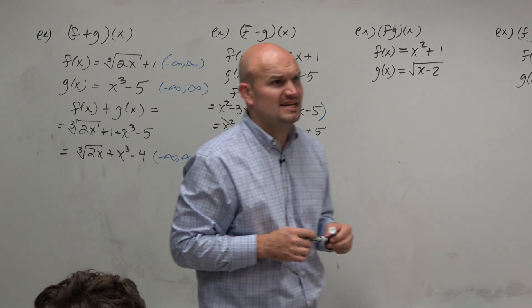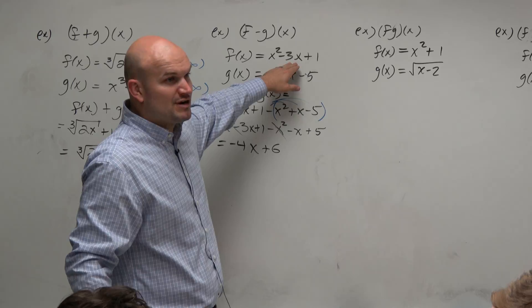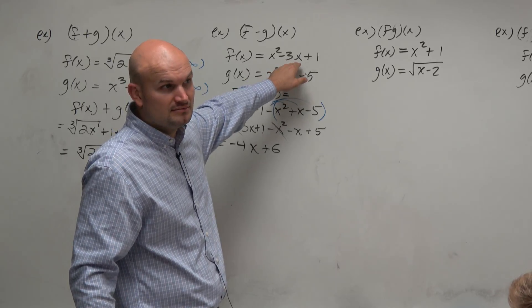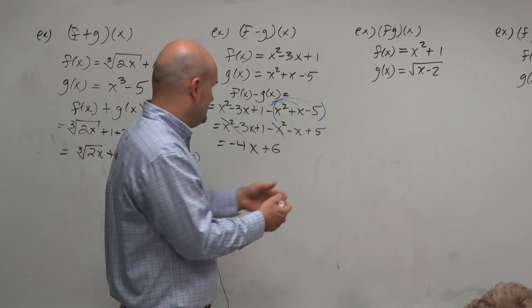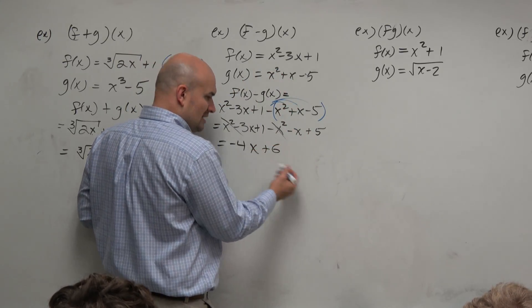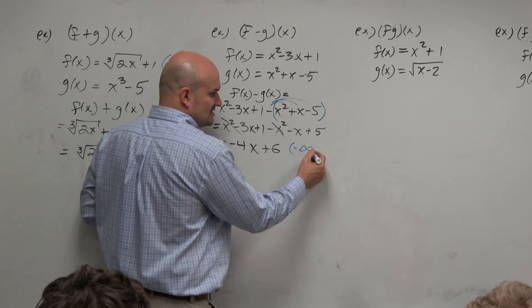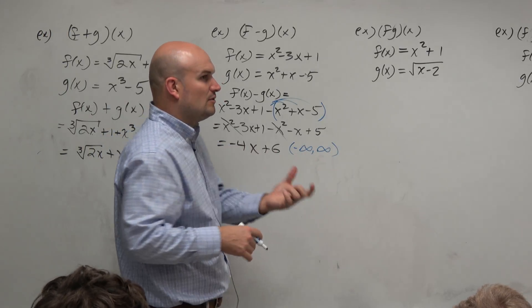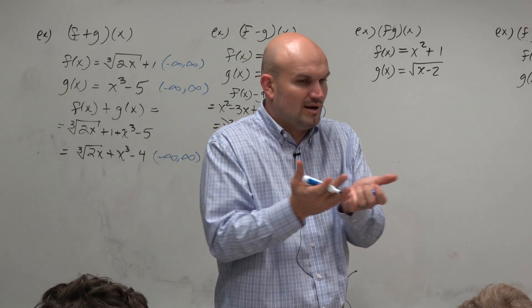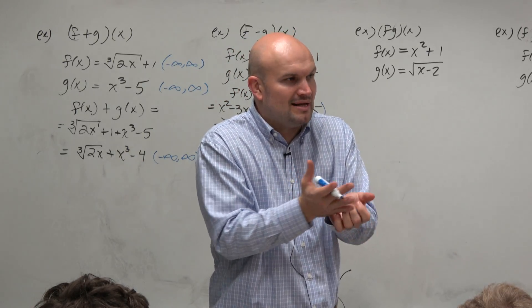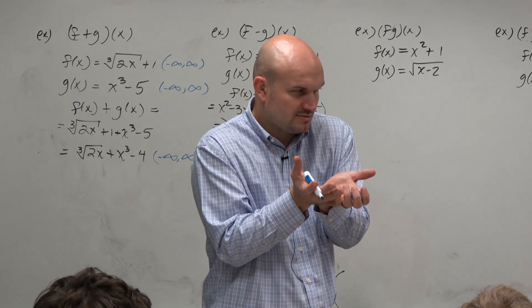Now again, if we want to identify the domain, let's look at our original functions. Quadratic — domain of a quadratic is all real numbers. Domain of another quadratic is all real numbers. We subtract them and we get a line, which is again going to be all real numbers. Doesn't it make sense: if you have a function that's all real numbers and another function that's all real numbers, it doesn't matter if you add or subtract — you're still going to have all real numbers. We're not introducing some new constraint, at least with addition and subtraction.